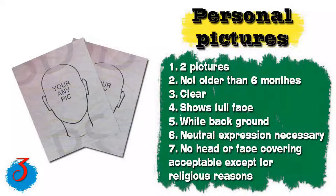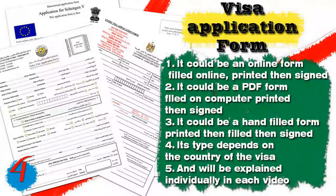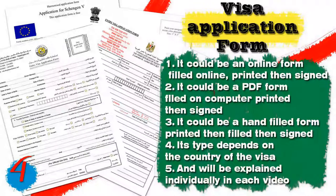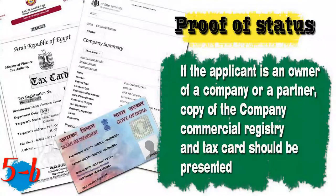Number three, personal pictures: you will need two photos not older than six months, clear, showing the full face with a white background and neutral expression — no head or face covering except for religious reasons. Number four, the visa application form: it can be an online form filled and printed then signed, a PDF form filled on computer then printed and signed, or a hand-filled printed form — the type depends on the country. Number five, proof of status: if you are an employee, you will need a letter from your employer or HR office stating your designation, date of employment, salary, period of stay, purpose of visit, and financial arrangements, with an original signature and stamp.